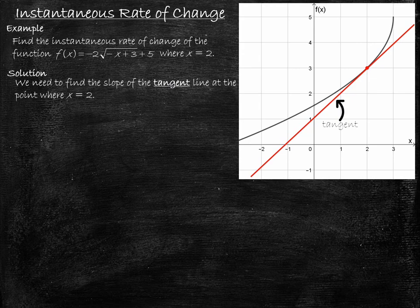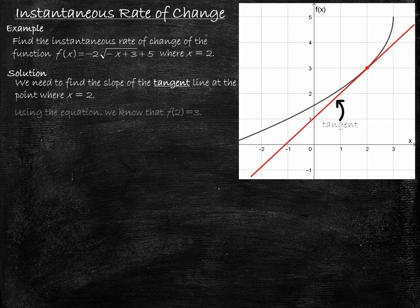Our goal is to find the slope of this tangent line, and by doing so we'll find the instantaneous rate of change of our function where x equals 2 — that is, the slope of our function where x equals 2. In order to solve this problem, we need to know the y value of our point of interest, the point of tangency. We have a graph available and can see the y value is 3. You can also find this by substituting 2 in for x in the equation, which evaluates to a value of 3. So our point of tangency is the point (2, 3).